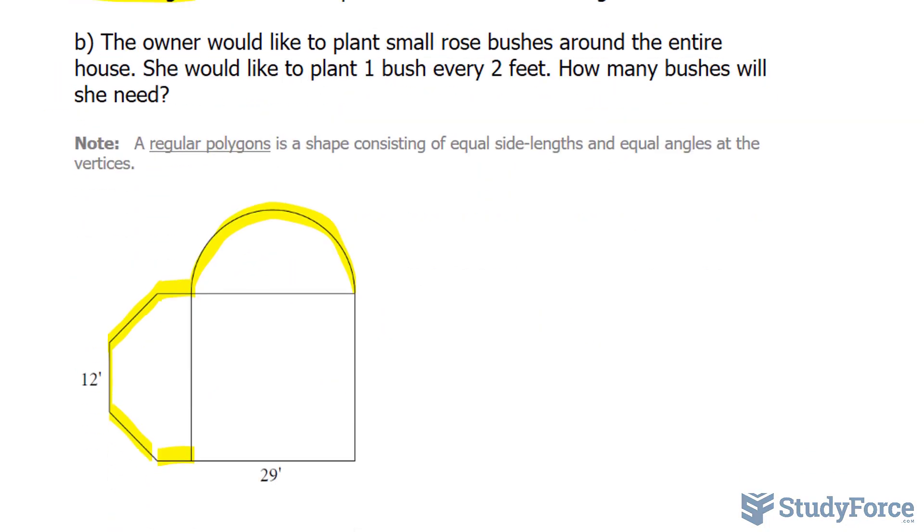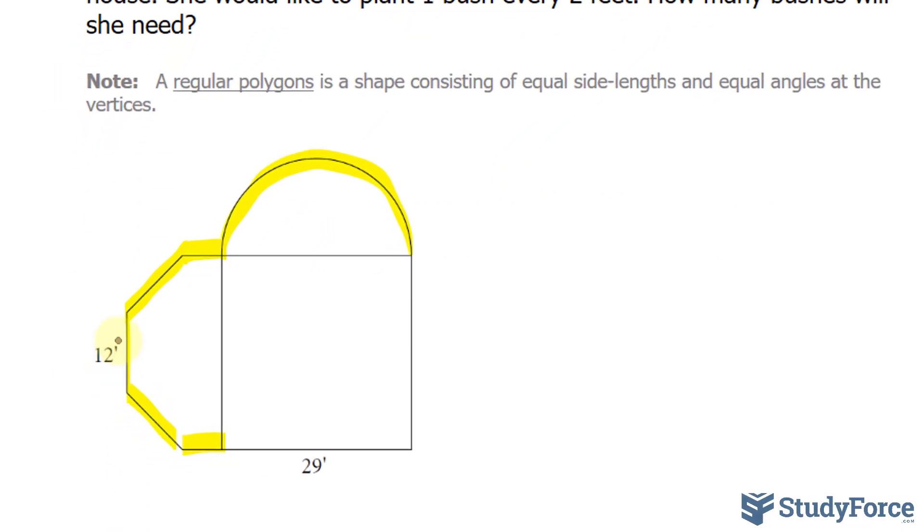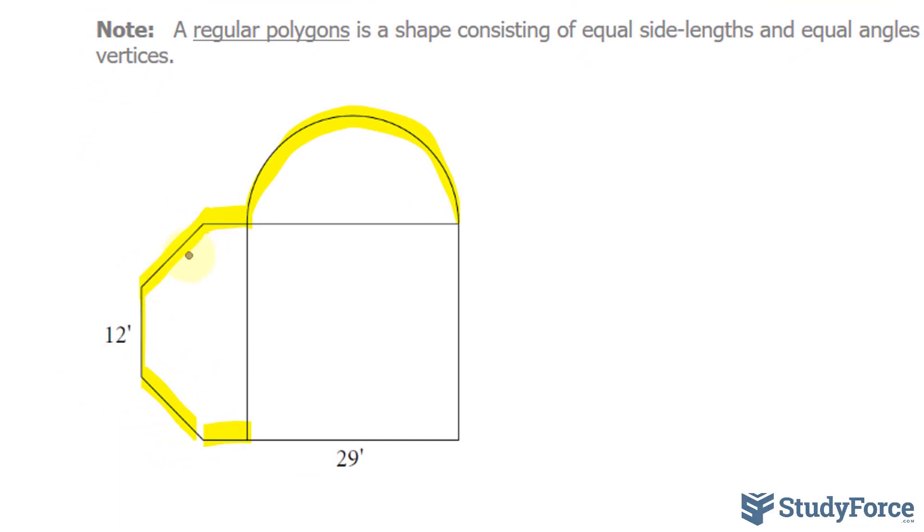Looking back at this, if this is 12 feet—this apostrophe means feet—then this is also 12 feet, that's 12 feet, and that, given that it's a semi-octagon, are both 6 feet.